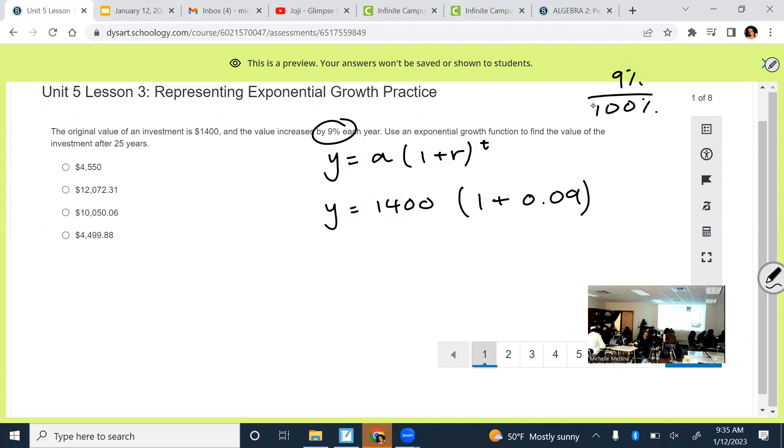Do you know how to convert any percent into a decimal? Divide by 100. I think that's the easiest way. And then the T will be time. What is T going to be? 25 years.